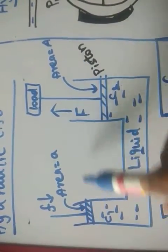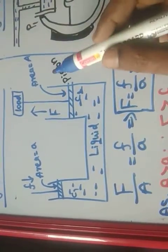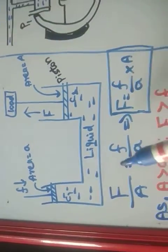That means the pressure at piston 1 is equal to pressure at piston 2. So that is pressure at piston 2 is F by A, capital F by area is capital A.